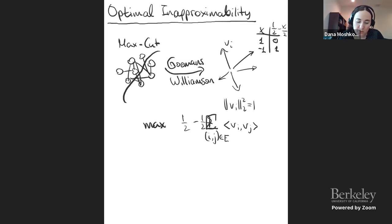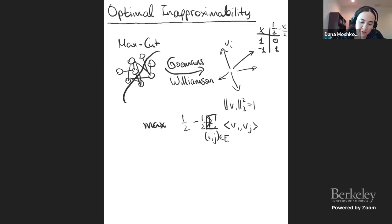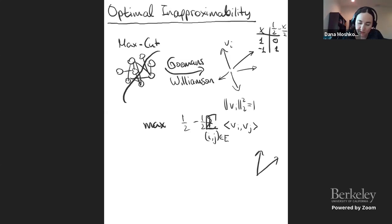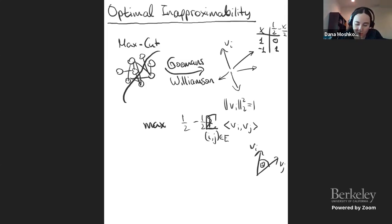The Goemans-Williamson algorithm converts our combinatorial problem to a geometric problem. Of course, the vectors the algorithm finds are not necessarily ±1 — you can have all kinds of angles between different vectors. Maybe v_i and v_j have a general angle theta between them. The question is: how do we take this and get a cut out of it?